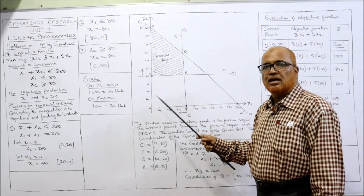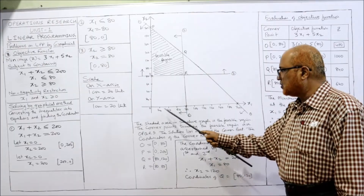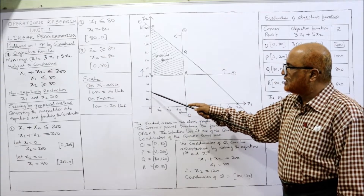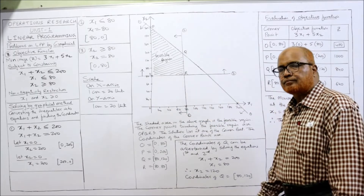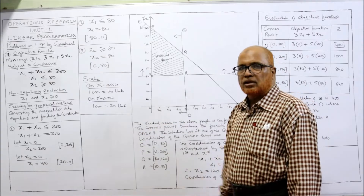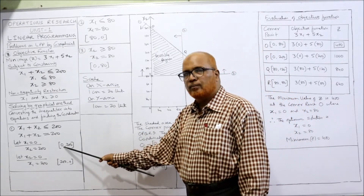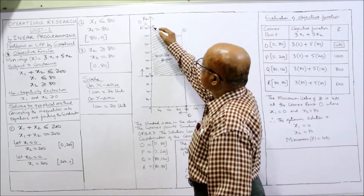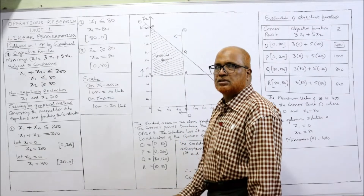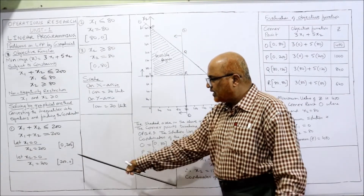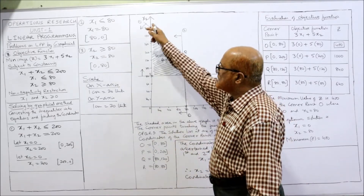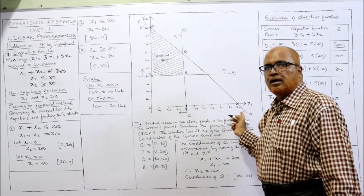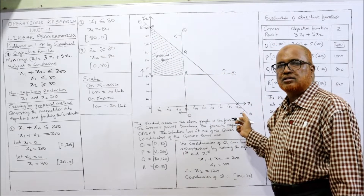Now we draw the graph. On the x-axis: 20, 40, 60, 80, 100 up to 200. Y-axis also the same: 20, 40, 60, 80 up to 200. Now we plot the coordinates. When x1 is 0, x2 is 200 — mark that point. When x1 is 200, x2 is 0 — mark that point. Join the two points with a straight line and extend it.